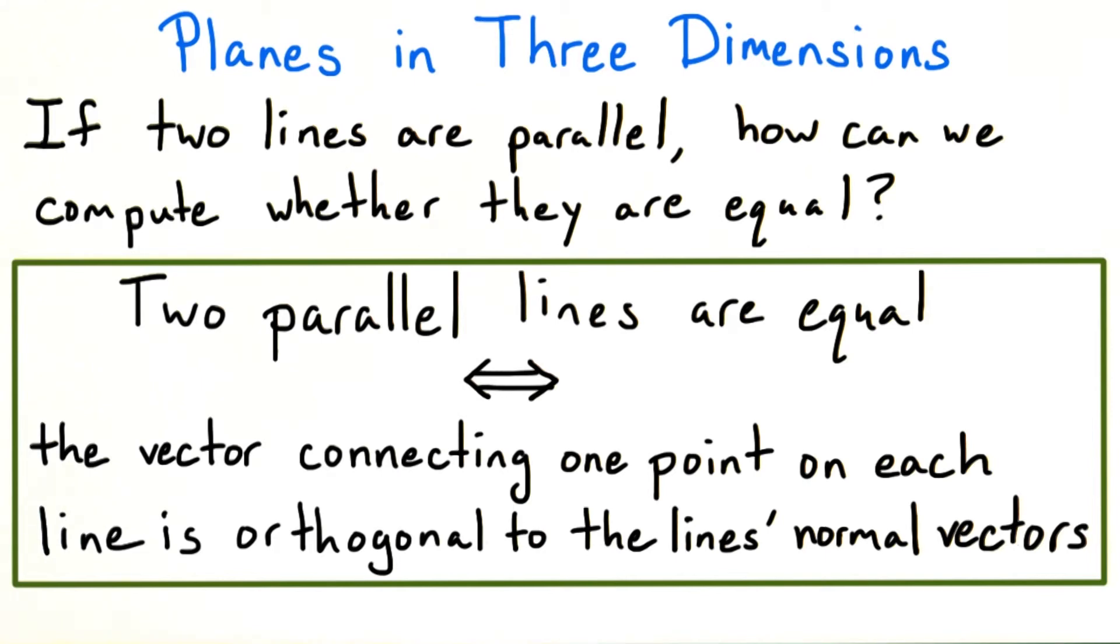Remember that if we knew two lines were parallel, then we could check to see if they were the same line by finding the vector between a point on one line and a point on the other. If that vector was orthogonal to each of the line's normal vectors, then the lines are the same.